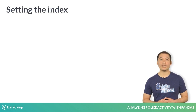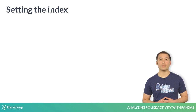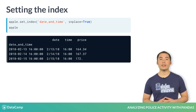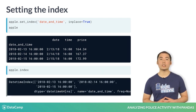One final step that we'll take is to set the date-time column as the index. That will make it easier to filter the data frame by date, plot the data by date, and so on. We'll use the set_index method and specify that the operation should occur in place to avoid an assignment statement. You can see that the default index has been replaced with the date-time column, and the index is now a special type called DateTimeIndex.